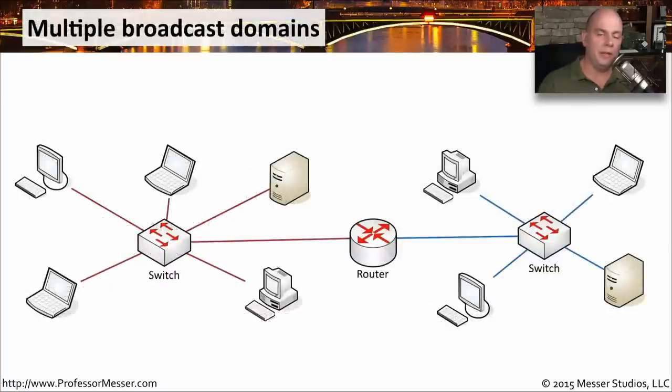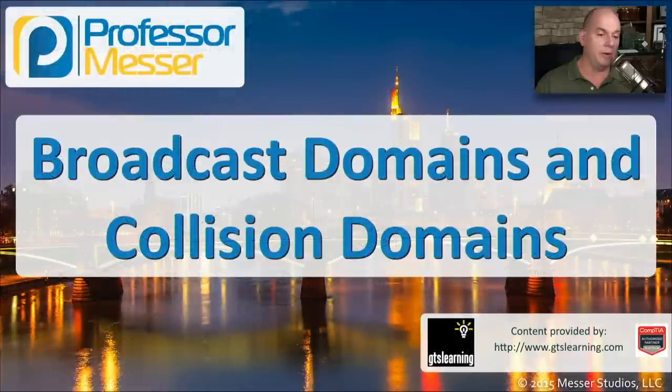If we place a router in the middle of the network, we can separate out these broadcast domains. So on the left side, we have a switch and a network. If a broadcast is sent from this network, it stops at the router. So this is one broadcast domain. If broadcasts are sent on this network, they would communicate to all of the devices on this network. But again, would be stopped by this router, which means we have two separate broadcast domains, both of them separated by this router right in the middle.